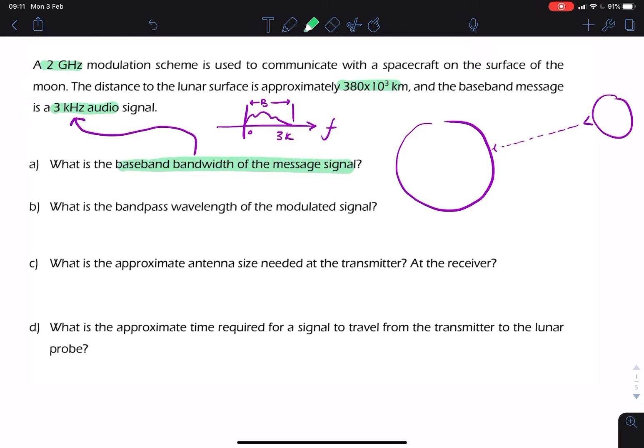Part B says, what's the bandpass wavelength? By bandpass, we're talking about after modulation. So, we're talking about the wavelength of the signal that's actually transmitted towards the Moon. We're talking about the modulated signal. So, we're now looking at this 2 gigahertz.